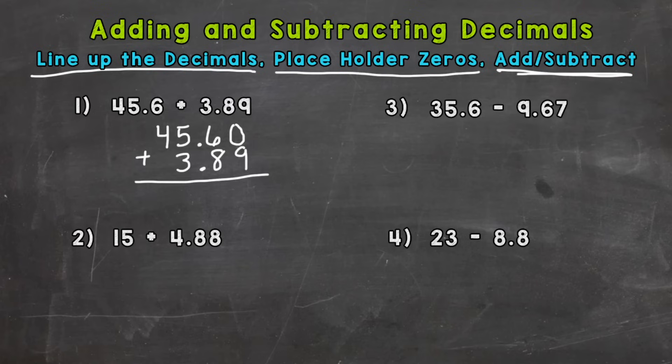So use placeholder zeros and then we can add or subtract. So 0 plus 9 is 9, 6 plus 8 is 14, carry the 1, bring your decimal straight down, it should be lined up throughout the whole problem. 1 plus 5 is 6 plus 3 is 9, and then 4. So 49 and 49 hundredths.